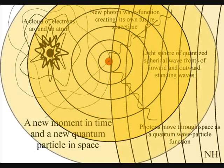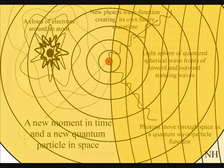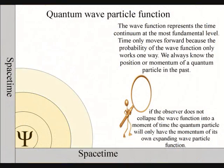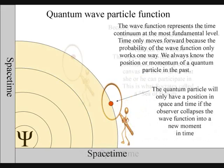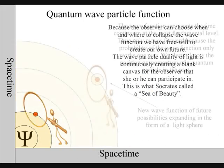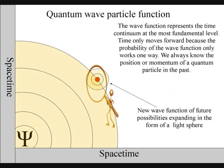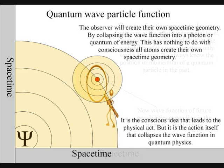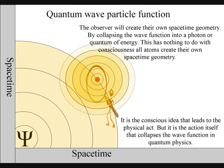This has nothing to do with consciousness. All atoms create their own space-time geometry. But it is because life in the form of an observer can choose when and where to collapse the wave function that we have free will. Life will create its own ripples in the fabric of space-time, forming its own broken symmetry of its own evolutionary path.